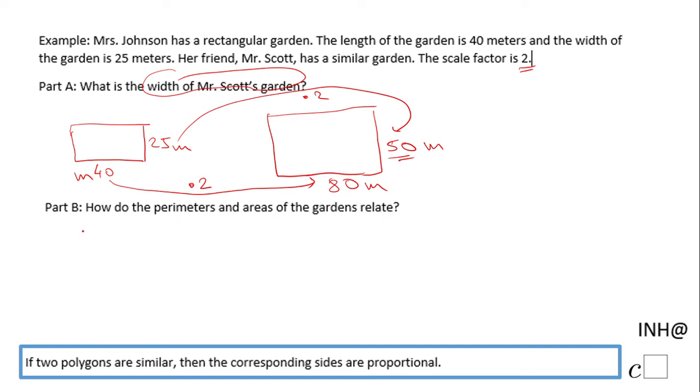Let's start with the perimeters. We have the perimeter of Miss Johnson's garden, that will be 2 times 40, right, because we have a length of 40.